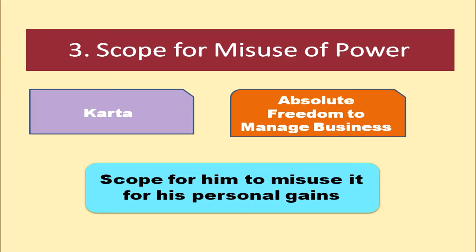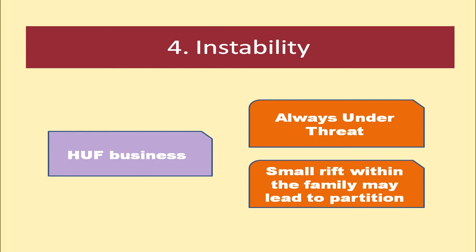Scope for misuse of power is a demerit: Karta has absolute freedom to manage the business, and there is scope for him to misuse that power for personal gains, which can badly affect the business. Instability is also a limitation — a small rift within the family may lead to partition of the business through mutual agreement, causing the business to come to an end.